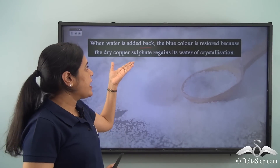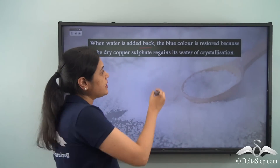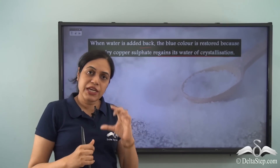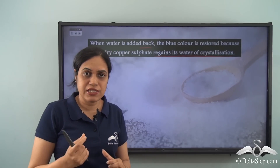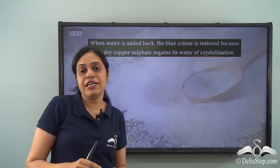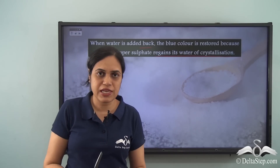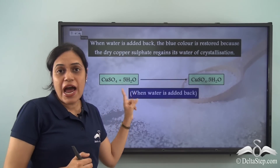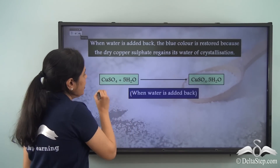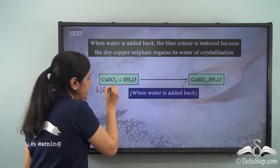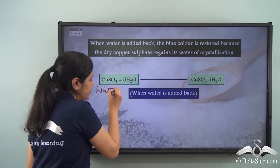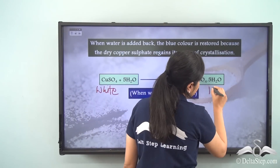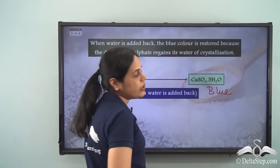The dry copper sulphate regains its water of crystallization. Initially on heating, it lost its water of crystallization. Now it regains or gets back its water of crystallization. So when we add water to the dry copper sulphate, which was white in colour, it regains its water of crystallization and turns blue in colour.